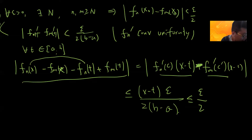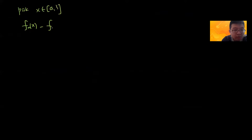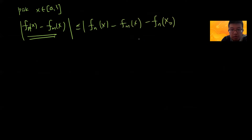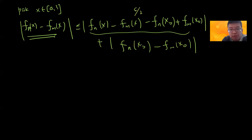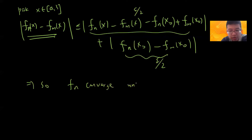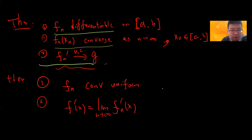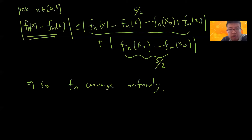So pick x. I want to first prove that fn converges uniformly, so I need to bound |fn(x) − fm(x)|. This is bounded by |fn(x) − fn(x₀) − (fm(x) − fm(x₀))| plus |fn(x₀) − fm(x₀)|. Now you guys see the trick: this first part is bounded by epsilon over 2, and the second part is bounded by epsilon over 2, so fn converges uniformly.